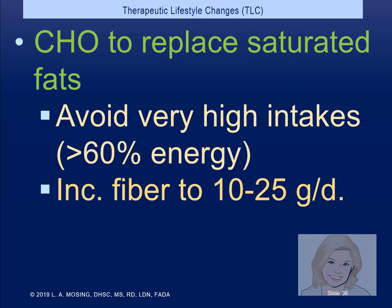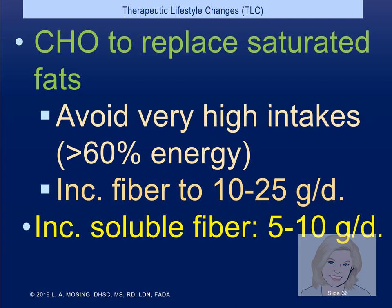Do patients get enough fiber? The goal is 25 to 30 grams, but most people are at about half that — around 14 or 15 grams. Adding another 10 to 25 grams more can make a difference. Oatmeal and beans are good sources of soluble fiber. Adding 5 to 10 more grams of soluble fiber — Metamucil counts — has a big effect on blood sugar and cholesterol.